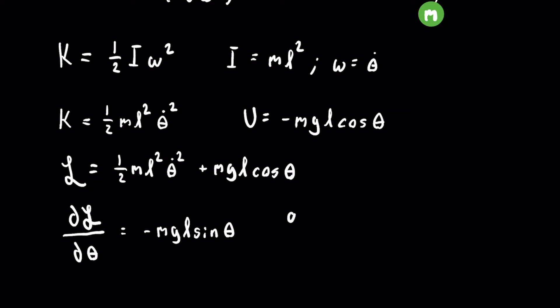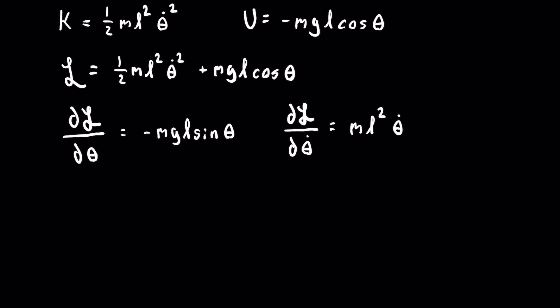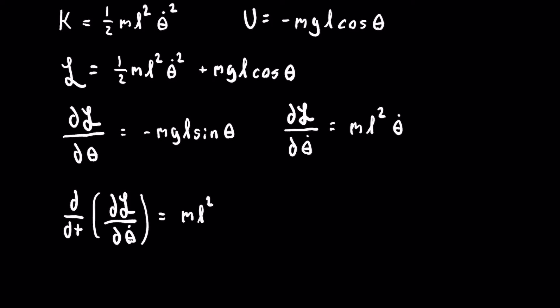Next we take the partial of the Lagrangian with respect to theta dot. The only theta dot is in the first term, and by using the power rule we get that this is equal to ml squared theta dot. Then we take the derivative with respect to time of that partial, and we get that it is equal to ml squared theta double dot.